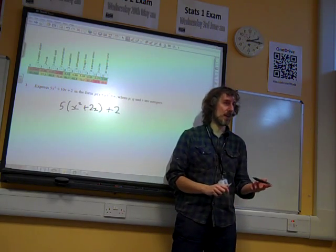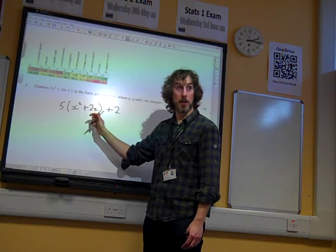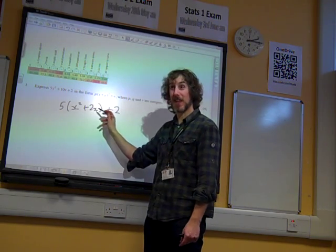And this is what some of us forgot: that if you're going to take the 5 out, you have to take it out as a factor of the 10x as well, which leaves us with 2x there.